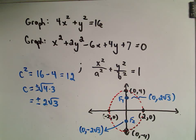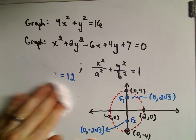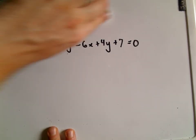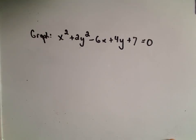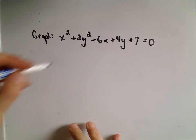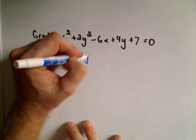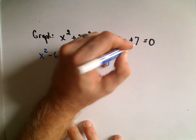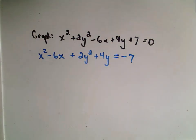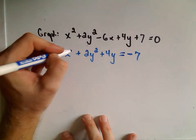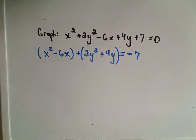We've got a little sketch of our ellipse. Now let's do the second, more complicated one. To graph it, we need to put it in standard form by completing the square. If you've forgotten how to do that, I have some videos on it. To start, I'm going to group the x terms together — x squared and minus 6x — and the y terms together — 2y squared plus 4y — and move the positive 7 to the right side by subtracting 7.